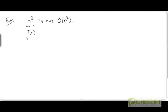Here is another example of a function t, which is n³, and the claim is that n³ is not O(n²). How do we prove that? For n³ to be O(n²), there needs to exist a constant